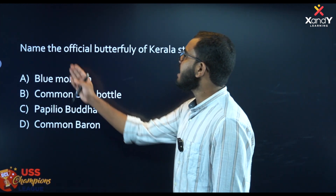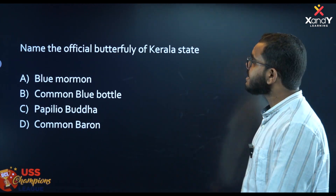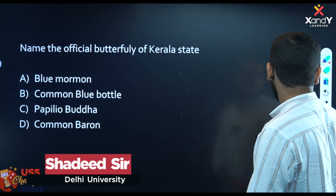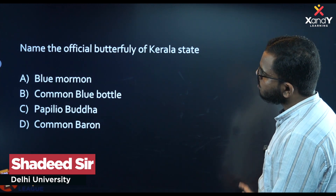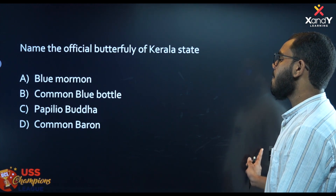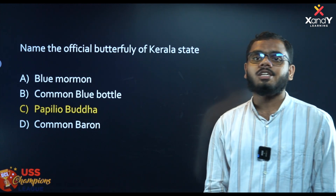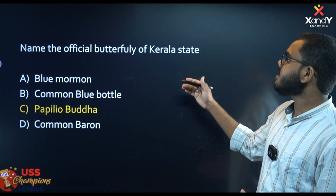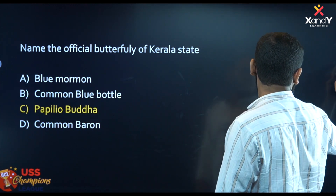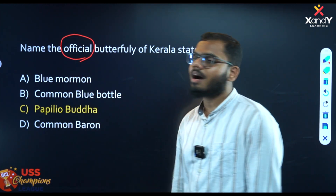The name of the official butterfly of Kerala is called Chitra Shalabath. There are 4 options: Blue Mormon, Common Blue Bottle, Papilio Buddha, and Common Baron. The correct answer is Papilio Buddha. It is the official butterfly of Kerala.